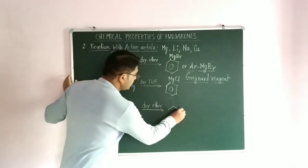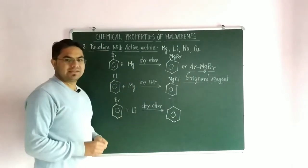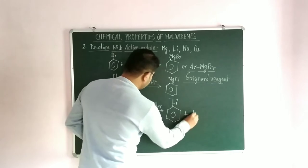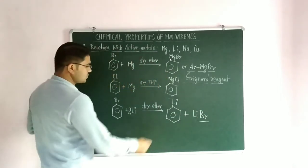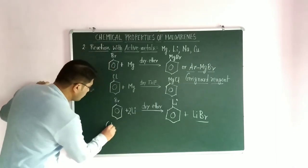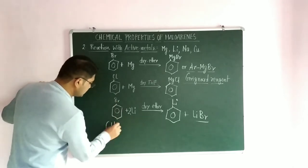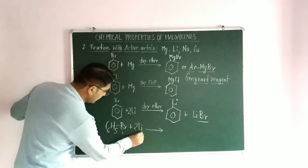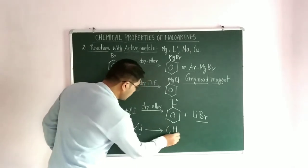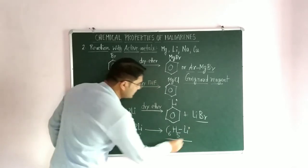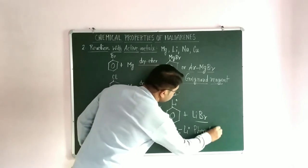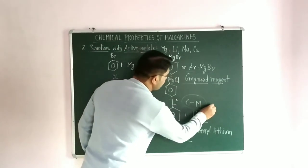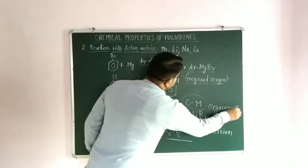The next reaction of halobenzene is with lithium, which results in the direct formation of organolithium compounds. Using two moles of Li, one Li and LiBr come out as byproduct. In molecular terms: C6H5Br + 2Li → C6H5Li (phenyl lithium) + LiBr. Since this involves a direct carbon-metal bond, it is known as an organometallic compound.